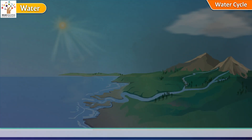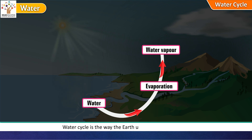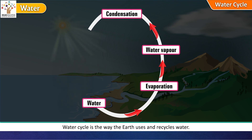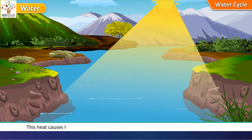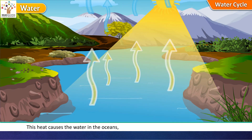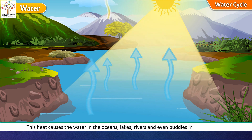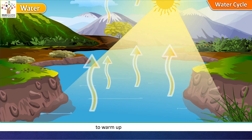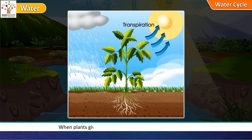Water cycle. Water cycle is the way the earth uses and recycles water. It is controlled by the heat of the sun. This heat causes the water in the oceans, lakes, rivers and even puddles in your backyard to warm up and evaporate. When plants give out water vapor, it is called transpiration.